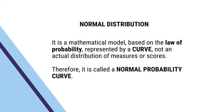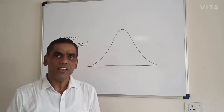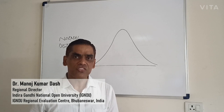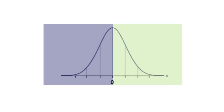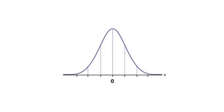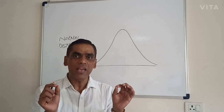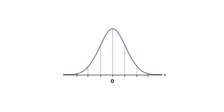Normal distribution is a mathematical model based on the law of probability. It is represented by a curve, not an actual distribution of measures or scores. Therefore, it is called a normal probability curve. It is a natural phenomenon that the measures of scores tend to be distributed symmetrically above the mean. Majority of the scores lie at the middle of the distribution, and very few scores lie at the two extremes, both right and left in equal proportions.